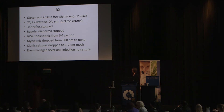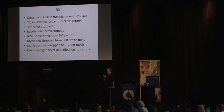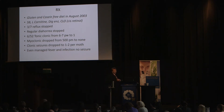Six weeks in, the tonic-clonic seizures had dropped from six to seven per week to one. Myoclonic had dropped from 500 to none. Clonic had dropped from one to two per month. During those six weeks he also had a fever — up until then, any fever required immediate admission. But he went through this fever phase without any inappropriate induction of seizures or panics, demonstrating his body is now able to handle a normal elimination of a pathogen.